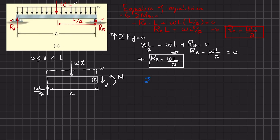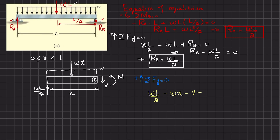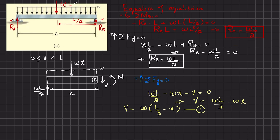For equilibrium, the sum of all forces in the y direction equals zero. We have three forces: Ra, the distributed load w·x, and the shear force V. So: wl/2 minus w·x minus V equals zero, giving V equals wl/2 minus w·x, or V equals w(l/2 minus x). This is the shear force equation for the range 0 ≤ x ≤ l.